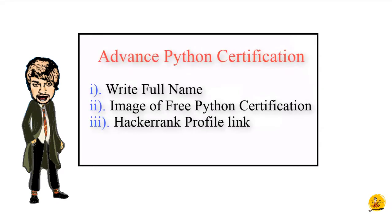In this email you have to write your name and attach the image of the free Python certification and the HackerRank profile link. Once we receive your email, the application validation process will start — it might take two to three days. If the application is found genuine, we will issue the advanced Python certificate by SN Gurukul.